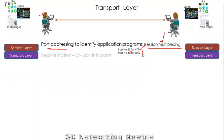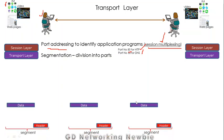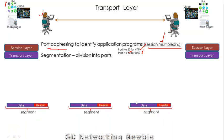The second job of the transport layer is to divide data into parts called segments. The session layer hands data to the transport layer, which adds a header on top of it. The combination of data plus header is called a segment, and this process is known as encapsulation.